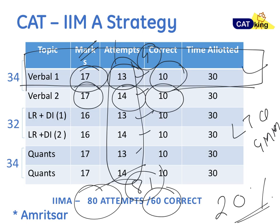If you attempt 13, 14, 13, 14 across the four slots, that adds up to 81 — and our golden number is 80 attempts. In each 30-minute slot you attempt 13 questions. The definition of an attempt is: if you know the question, solve it; if you don't, smart-guess it. For those targeting IIM Ahmedabad, Bangalore, or Calcutta, no section should have more than four questions left unattempted, and getting 10 correct per section adds up to 60 correct total.